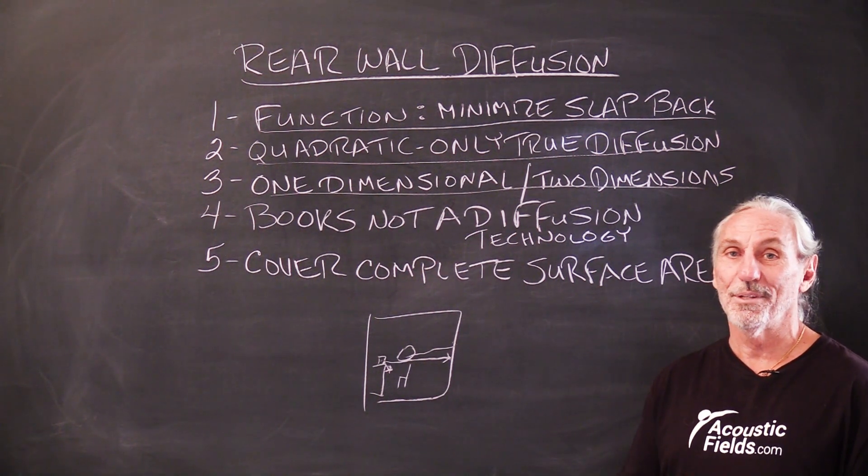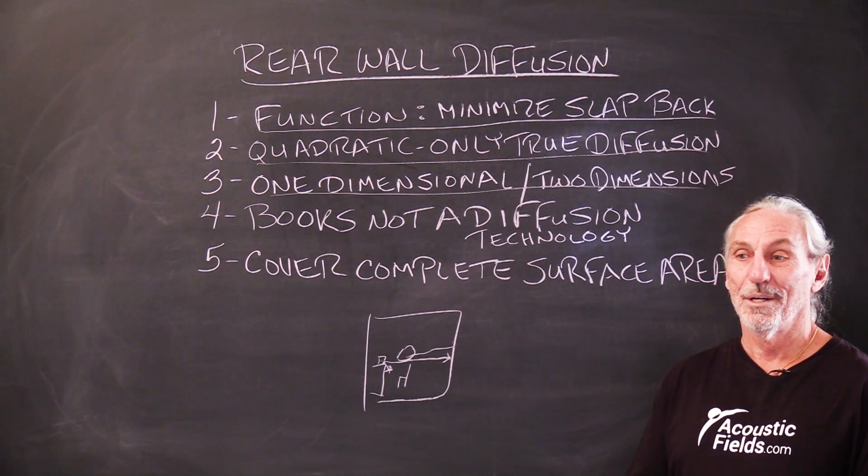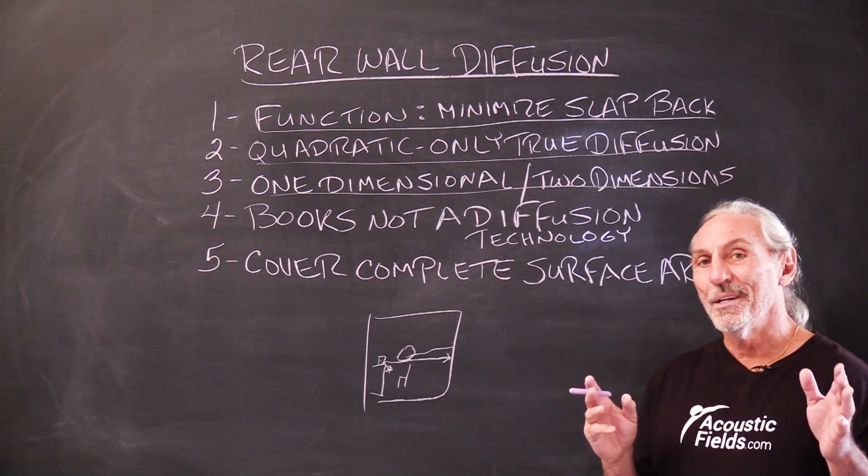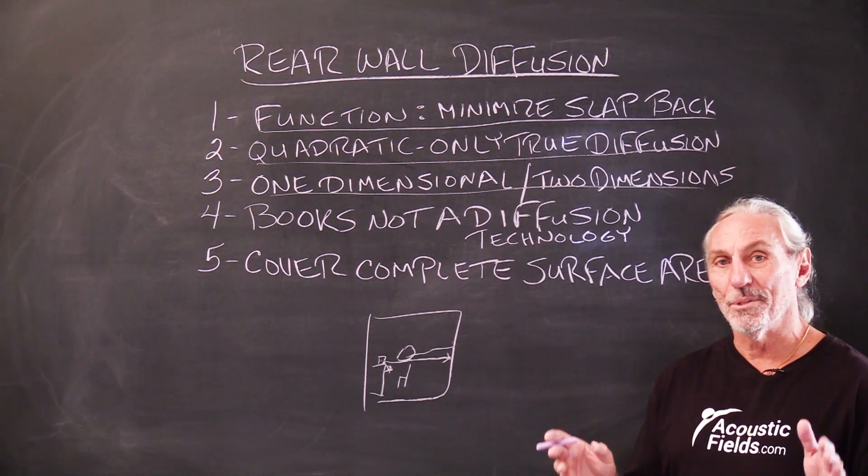So if you could find a bunch of books that were two inches wide and you could arrange them in six, eight, nine inch depths, you could make a diffuser. It would also be an absorber too, because books are absorptive. So what I'm saying is it's not predictable and consistent.